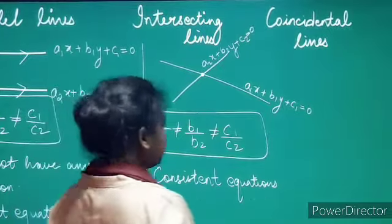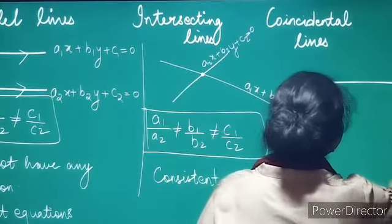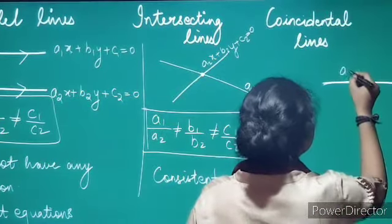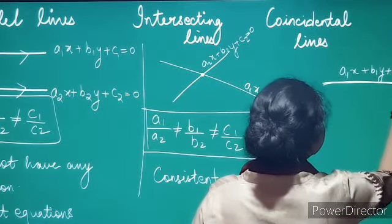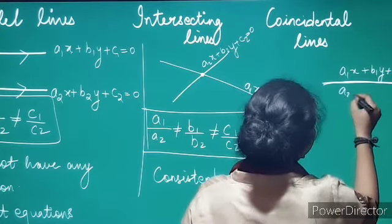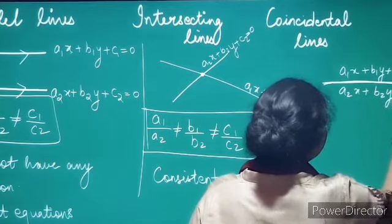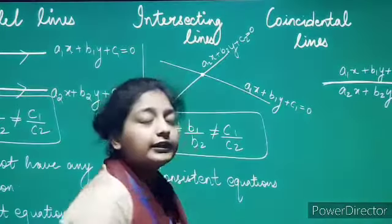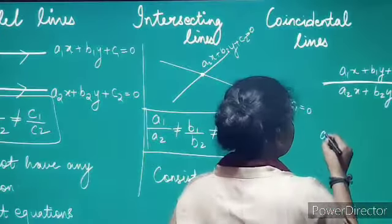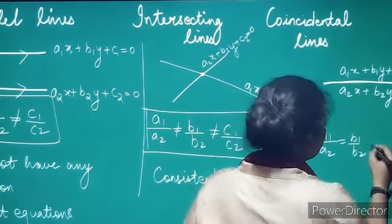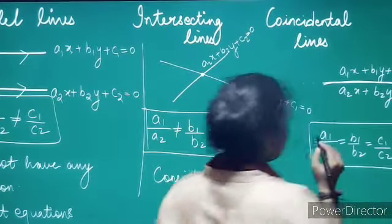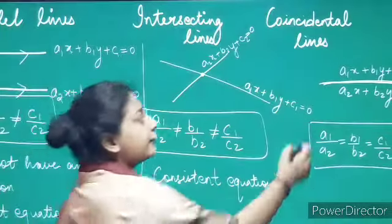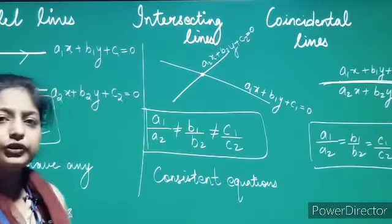Next, we have coincidental lines. Coincidental lines means two lines that lie on top of each other — when two lines lie upon one another, they are known as coincidental lines. Suppose the equation of the first line is a1x + b1y + c1 = 0 and the equation of the second is a2x + b2y + c2 = 0. The condition for coincidence is: a1/a2 = b1/b2 = c1/c2. Since the two lines are lying on top of each other, every point on the line gives us a solution for the two equations.